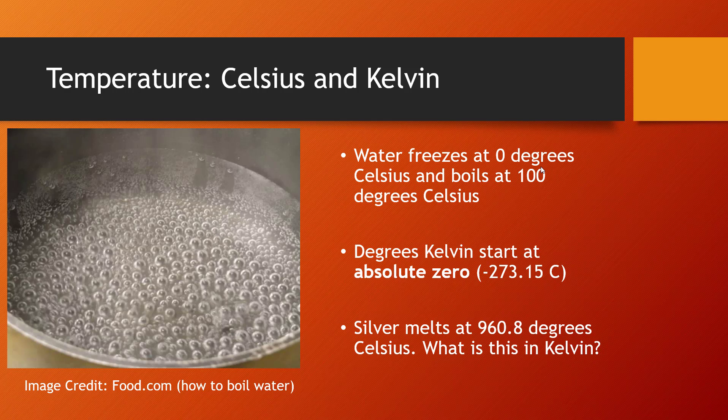Degrees Kelvin is a different type of measurement, which starts at absolute zero. Absolute zero is how cold things can get — the absolute coldest something can get. Absolute zero is negative 273.15 degrees Celsius, so that's where degrees Kelvin starts. You just add 273.15 to your Celsius measures.